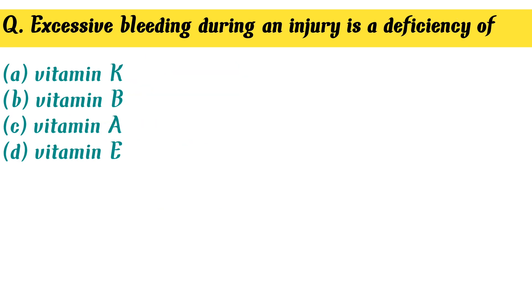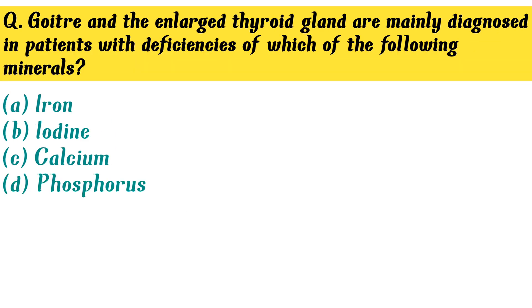Excessive bleeding during an injury is a deficiency of — Option A. Vitamin K is the correct answer.